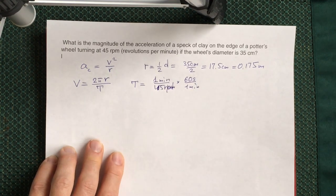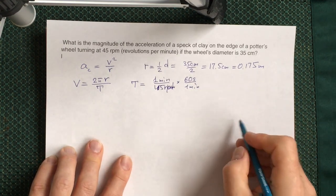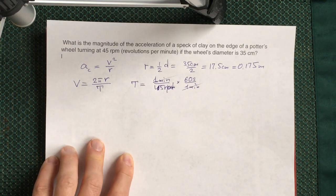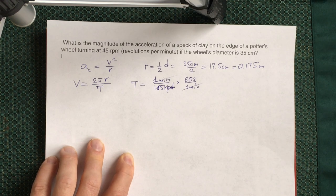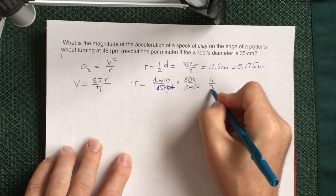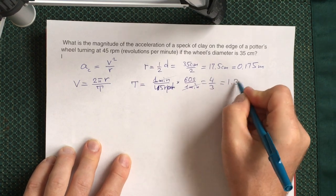So you will cancel one minute, 60 divided by 45 gives you 4/3, or 1.33 seconds.